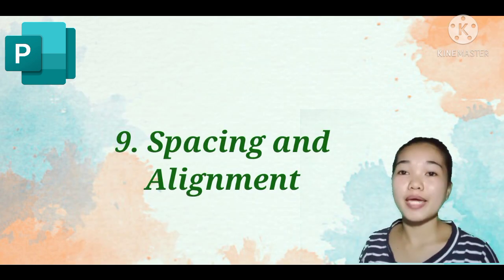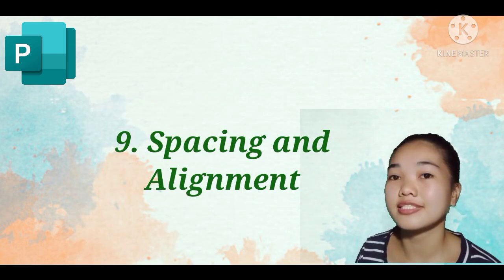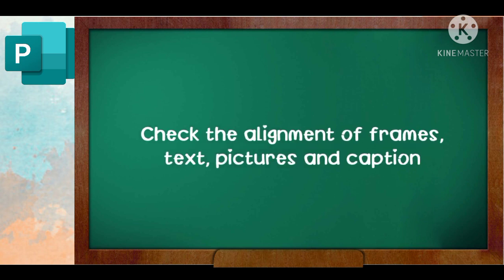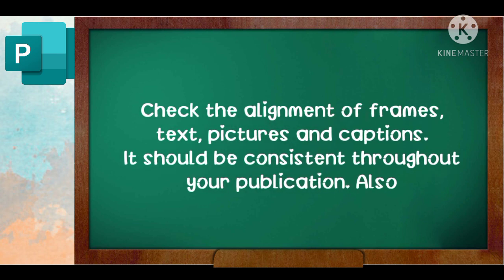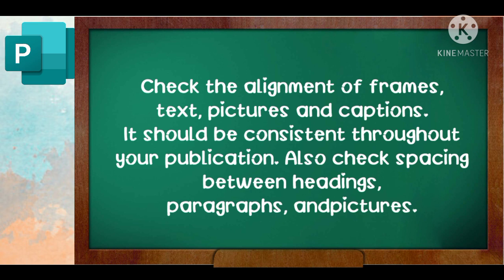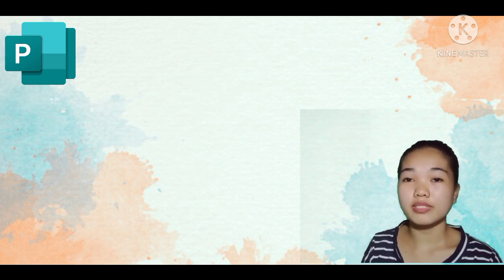Nine, spacing and alignment. Check the alignment of frames, text, pictures, and captions. It should be consistent throughout your publication. Also check spacing between headings, paragraphs, and pictures. The spacing should be consistent throughout your publication.